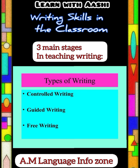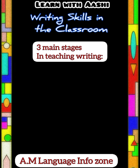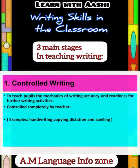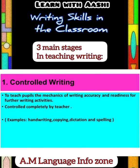The first stage is controlled writing. Controlled writing exercises aim to make it difficult for the student to make mistakes. Examples of such exercises would be substitution tables and copying exercises.